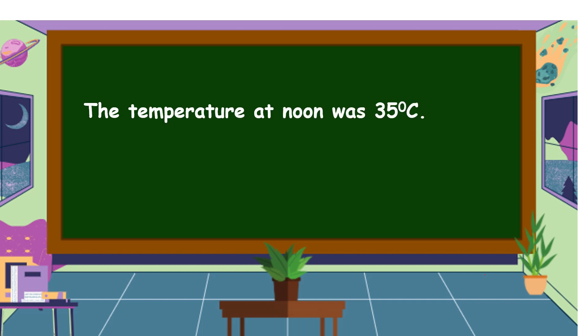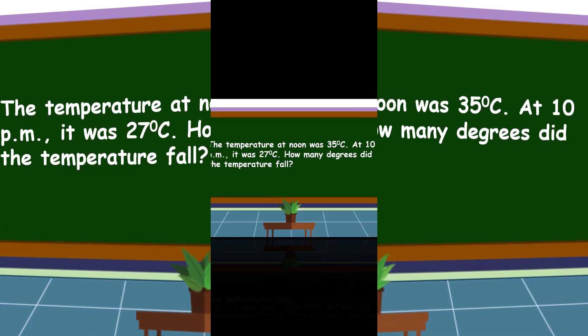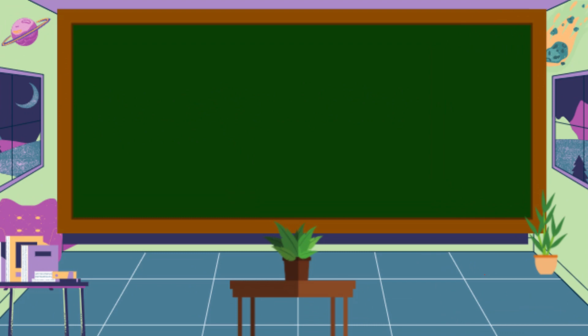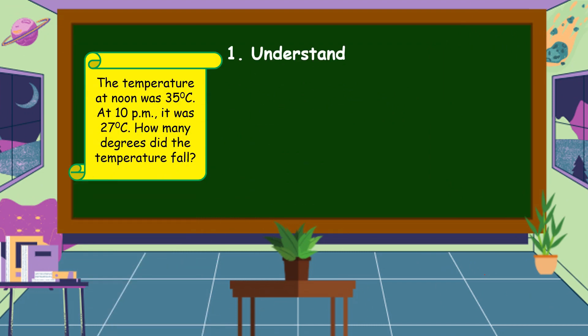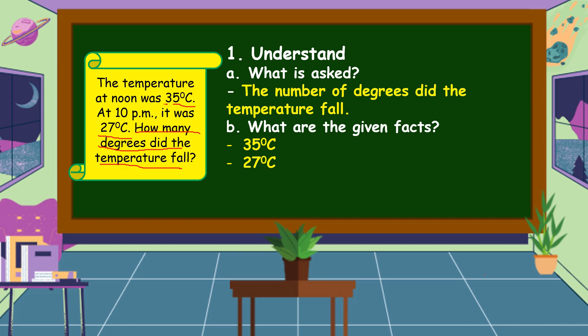Next problem. The temperature at noon was 35 degrees Celsius. At 10 p.m., it was 27 degrees Celsius. How many degrees did the temperature fall? To answer our problem, first we are going to understand. What is asked? It is asking for the number of degrees the temperature fell. What are the given facts? The given facts are 35 degrees Celsius and 27 degrees Celsius.